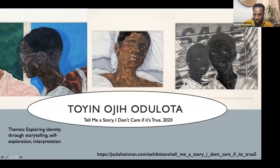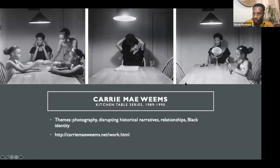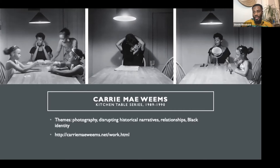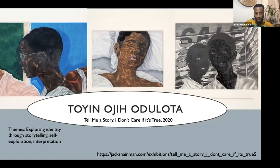I'm going to go through the slides and show you just a few artists that you can use and introduce to your students in this critique process. When we break off into breakout groups, I have three different pieces for you to look at, and each breakout group would use one and engage in the closed study process. Carrie Mae Weems is an artist we use in DCPS to explore themes of identity through storytelling and self-exploration.